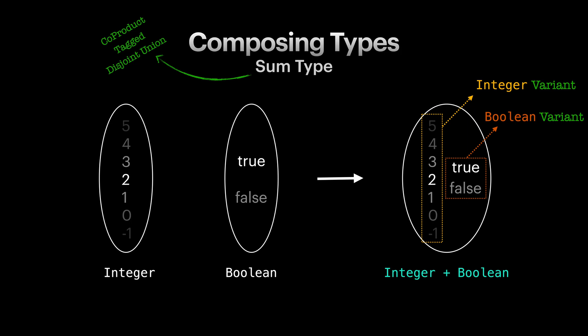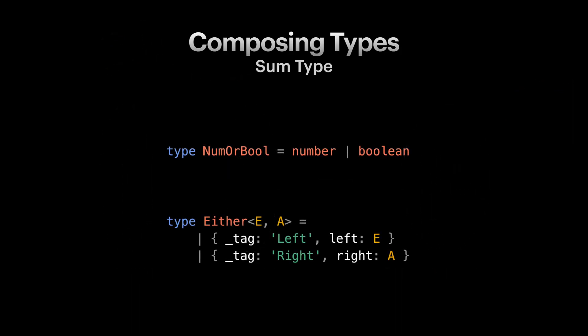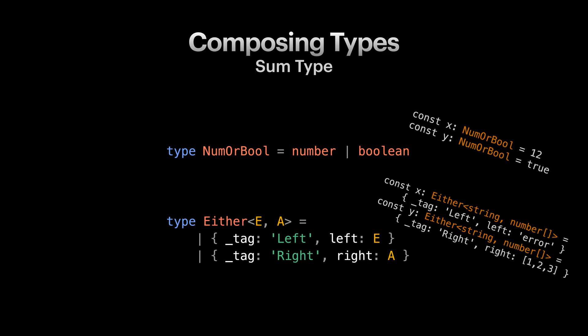In TypeScript we can model sum types using union types and the pipe symbol. Here we have a type num or bool and a type constructor either. Num or bool is a sum type of number and boolean. So a sample value of this type can be 12 or true. Either is a generic sum type that can have a left object type or right object type. Here you can see two samples of either of a string and number array.